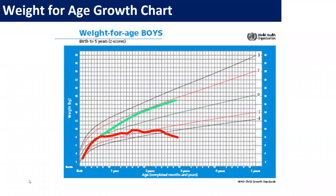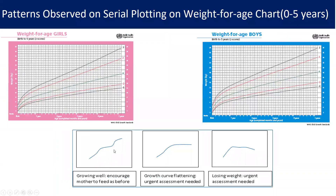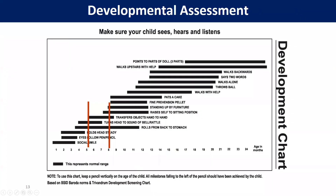There are three types of growth patterns. The first one is okay — the child is growing, and we should encourage the caregiver that whatever they are doing is right and they should continue. But the second curve — there is flattening or faltering — so we have to assess the child and look for the cause of this faltering. After growth comes development. For developmental screening, there are many charts, like the Baroda and Trivandrum developmental screening charts.